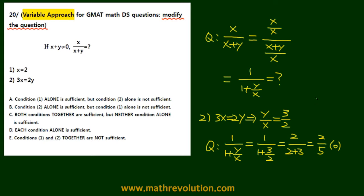Condition 2 is sufficient, and B is going to be our answer. Remember, the first thing we do with the variable approach is modify the question. That's why B is the answer.